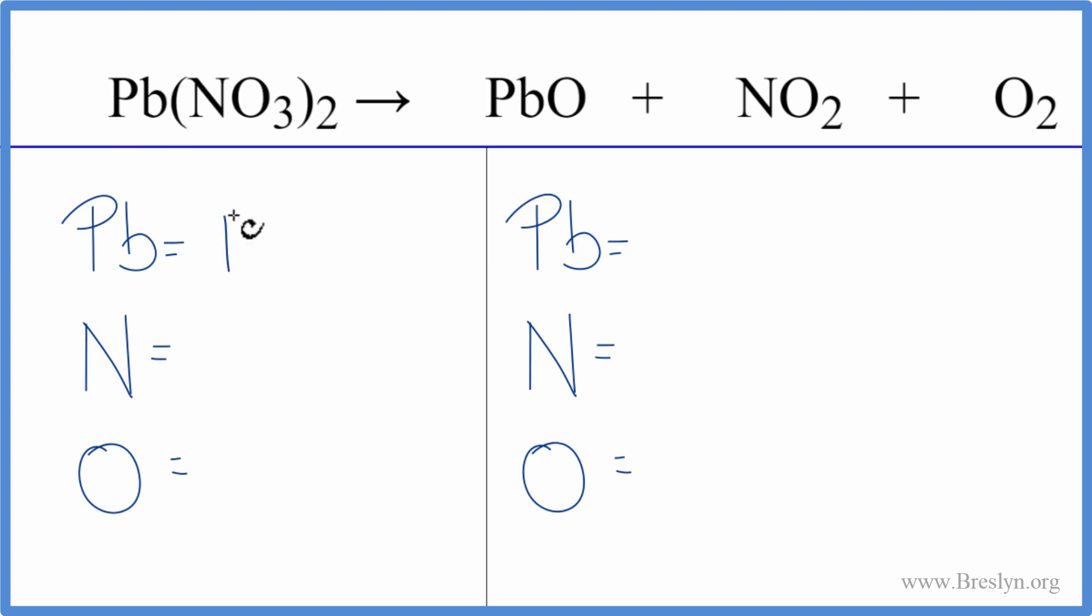So first, we have one lead, and the two means we have two of these nitrate ions, so we have two times the one, two nitrogens, two times the three, six oxygens.